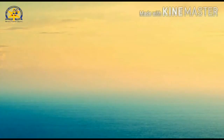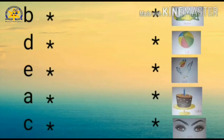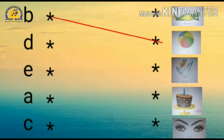We will now solve this. Children, what's the first letter? B, correct. So B for ball. Come on, match it. Match the letter B with ball. Very good children!